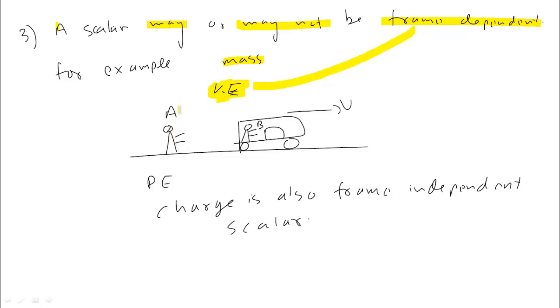Suppose boy A is standing on the ground. Boy B is standing inside a moving bus. To A, the bus is moving, the boy is moving, and the box is moving. So according to A, the box's kinetic energy is ½mv². But B doesn't see the box moving.